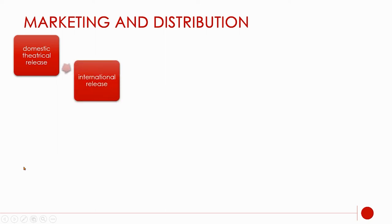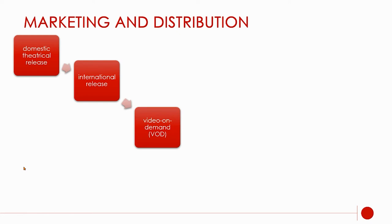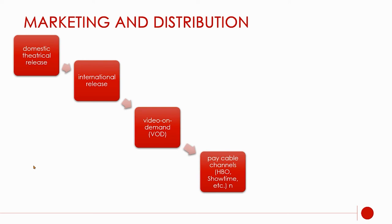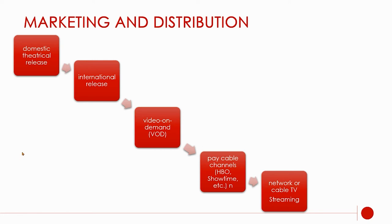The distribution order: first domestic theatrical release here in America, then international release — a lot of our movies do really well in China and Russia. Then video on demand, then pay cable like HBO and Showtime, then the networks like NBC and ABC, or cable TV or streaming, and finally syndicated TV — like old movies playing on Sunday afternoons.